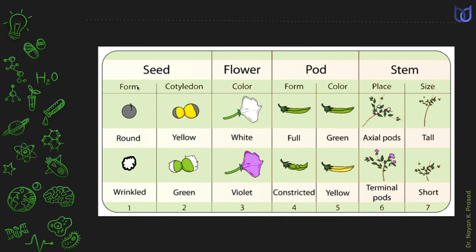The surface or the structure of the surface may vary. The seed form may be round or may be wrinkled. Similarly, the cotyledon of the seed may be yellow or green in color. Flowers vary in their color. The flowers may be white or may be violet.